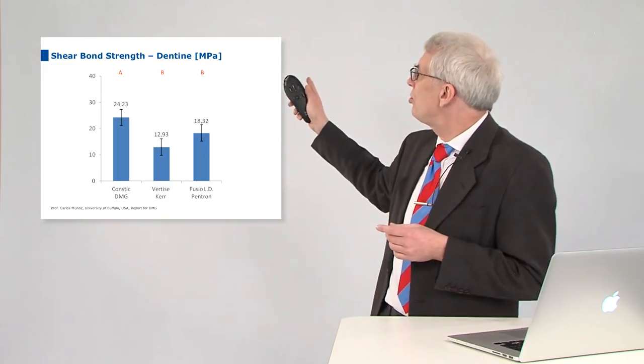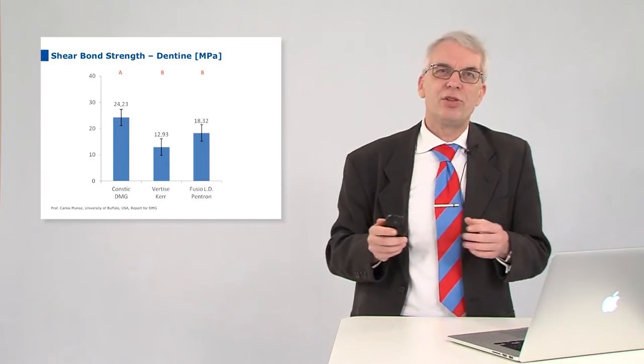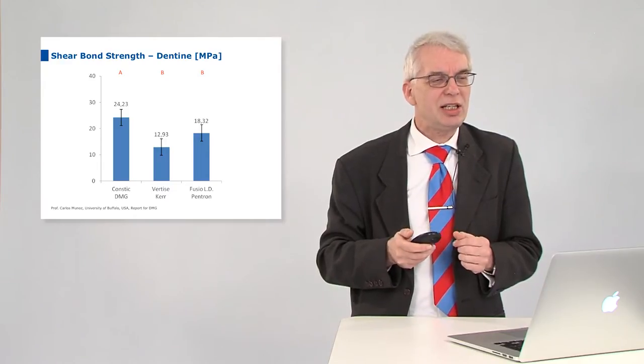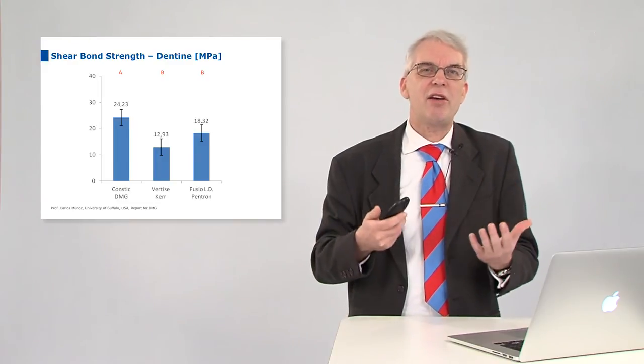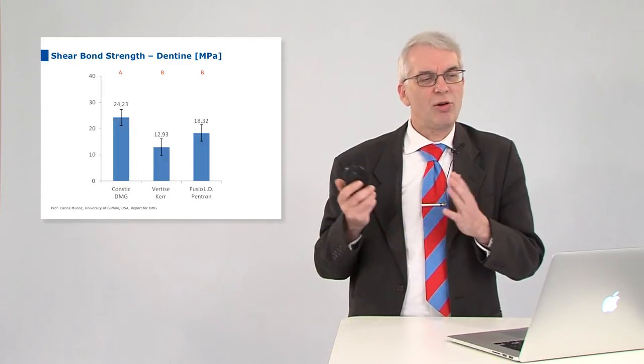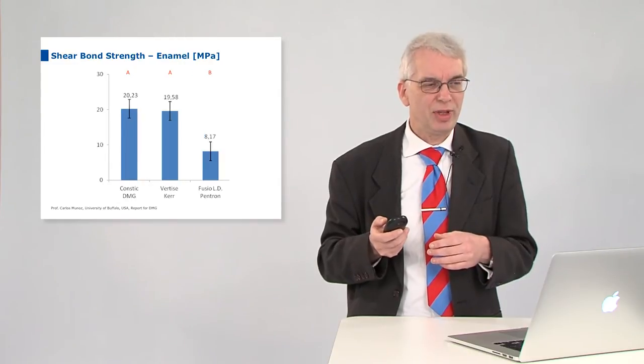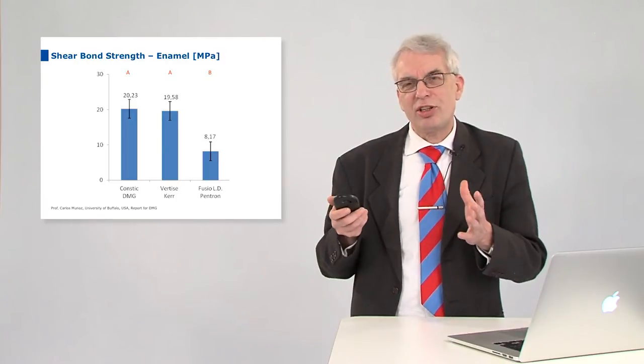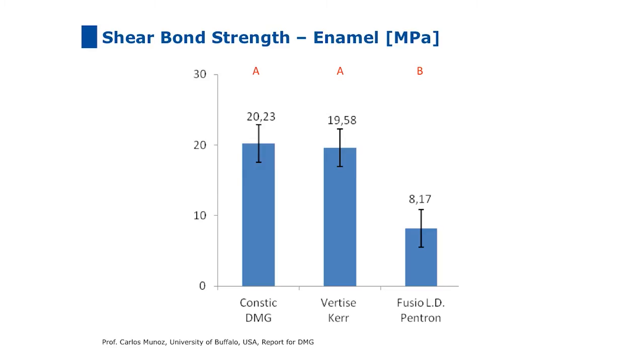So what you can see here is a comparison of CONSTIC in comparison with VERTIS and FUSIUM—actually this is currently the only other competitors that we have. Now I want to draw your attention to these letters up there—A's and B's. The A means anything with the letter A has statistically the same performance. Anything with the letter B has statistically the same performance. So what we can see is that in dentin we already have a better bond strength compared with VERTIS and FUSIUM. And if we look at enamel, we find the picture has changed a little. Now we have about the same bond strength and a very good bond strength as VERTIS, but FUSIUM has only about half of that.